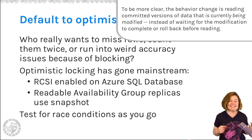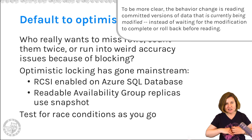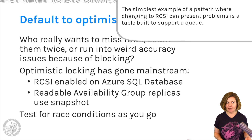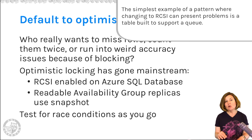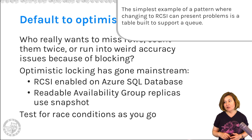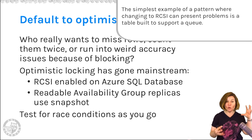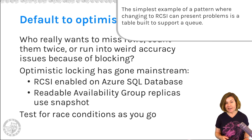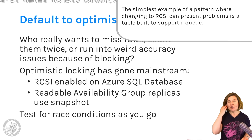This can happen under read-committed snapshot isolation because you're just changing the default isolation level for everything. When you're doing a new application and you start out with these issues, writing your code under the assumption that transactions can read committed data without being blocked by your update, you test for them as you go and you don't have those situations created in your code.